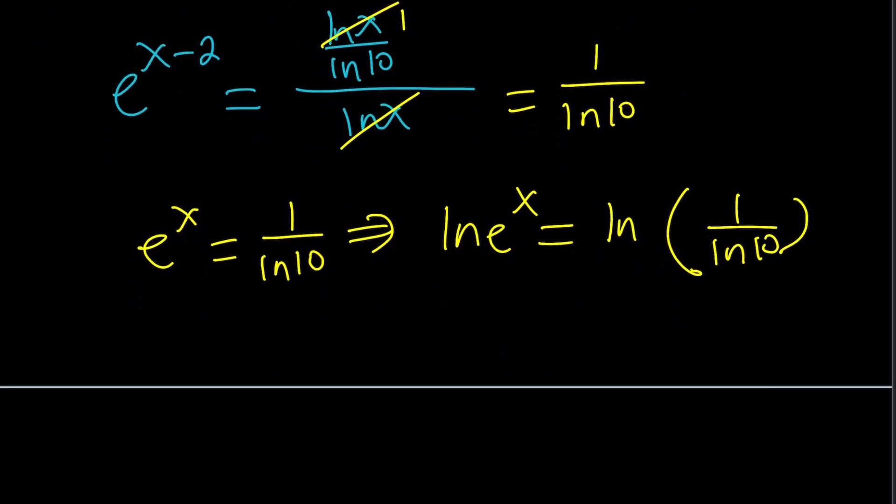And then from here, x is going to be ln 1 over ln 10. So, here's what happens. x here is a negative value. Why? Because 1 over ln 10 is less than 1. And if you think about the graph of ln x, if x value is less than 1, then its ln is going to be less than 0. So, this is a negative quantity.